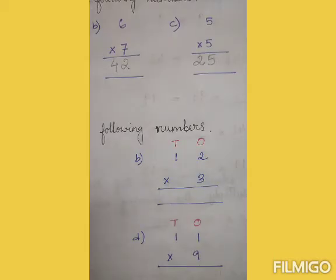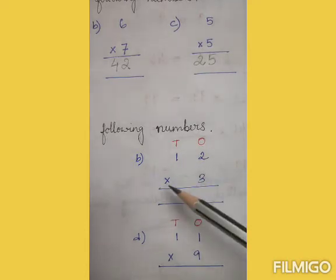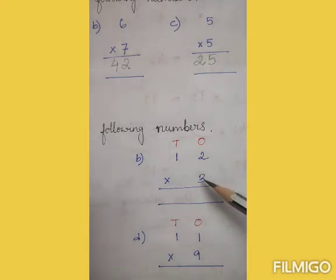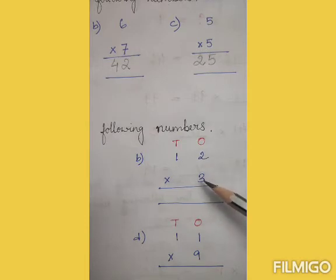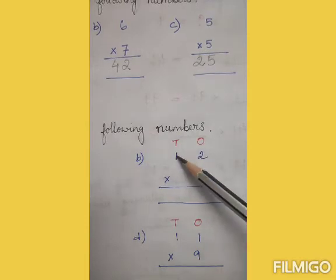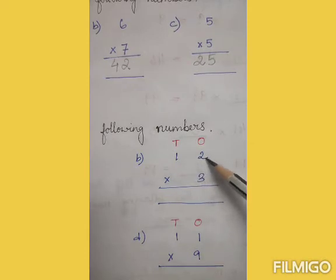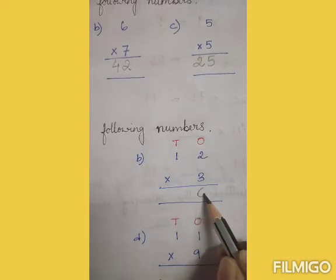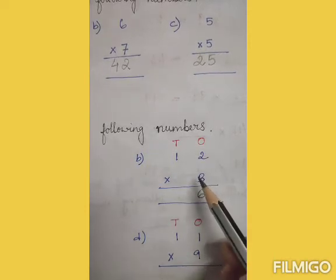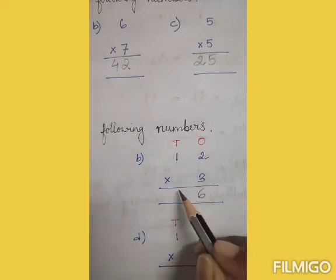Question number B: 12 into 3. First we will multiply 3 into 2, then 3 into 1. So 3 twos are 6. And 3 ones are 3.